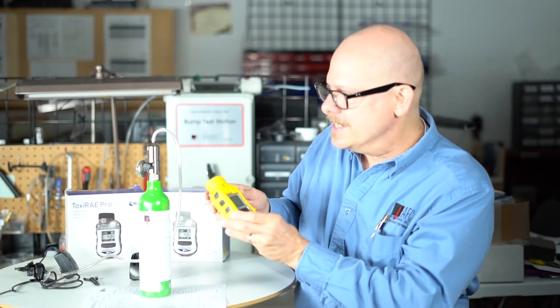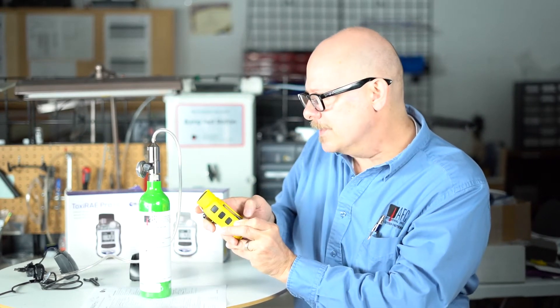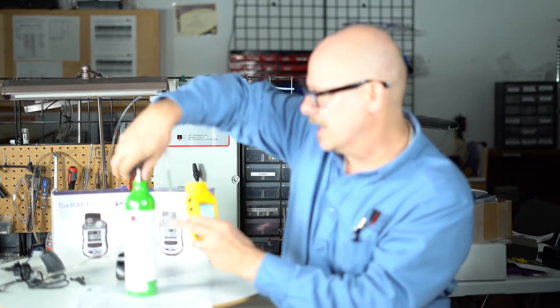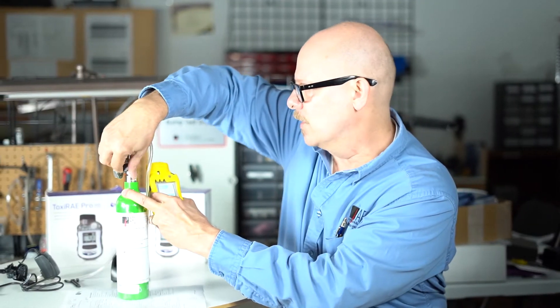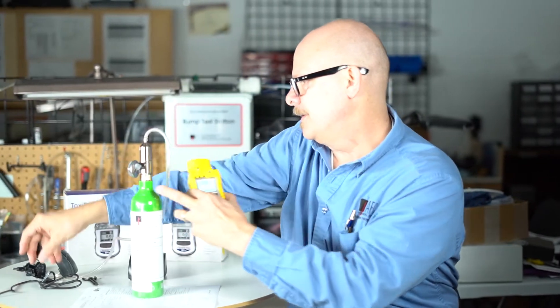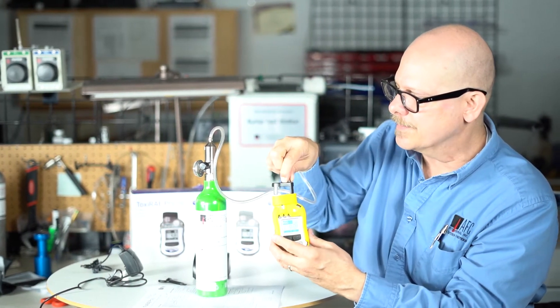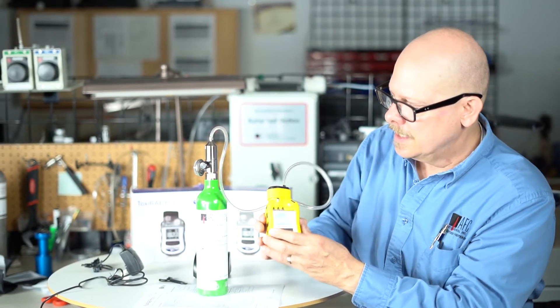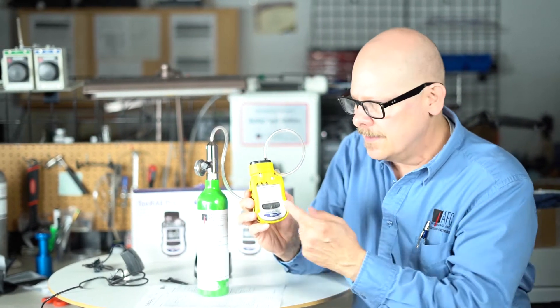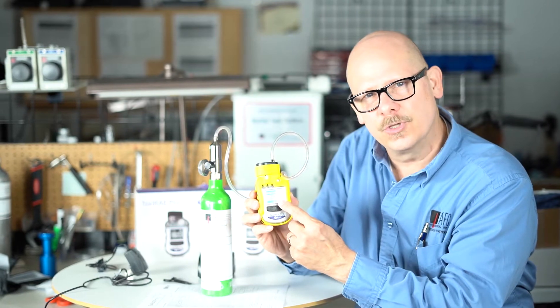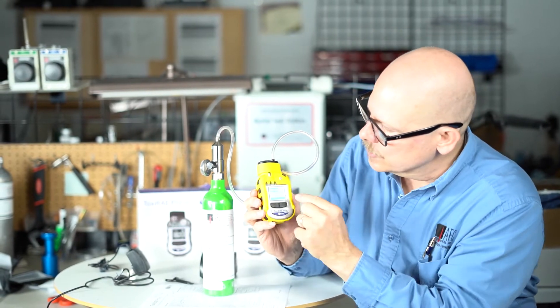I'm going to go ahead and demonstrate on this PID here where we have 100 ppm isobutylene. I'm going to turn on that gas. This little adapter here does come with it. It's a calibration adapter. I'm just going to put it on top. And you can see right away, that concentration is getting really crazy.